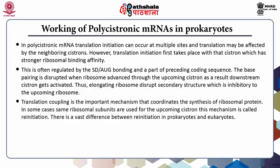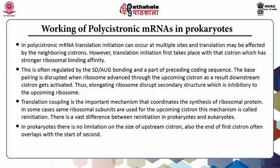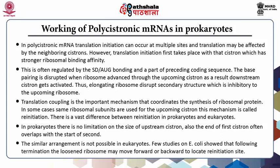Translation coupling is an important mechanism that coordinates the synthesis of ribosomal proteins. In some cases, ribosomal subunits are reused for upcoming cistrons — this mechanism is called re-initiation. There is a vast difference between re-initiation in prokaryotes and eukaryotes. In prokaryotes, there is no limitation on the size of upstream cistrons and the end of the first cistron often overlaps with the start of the second. This similar arrangement is not possible in eukaryotes. Studies on E. coli showed that following termination, the loosened ribosome may move forward or backward to locate the re-initiation site.